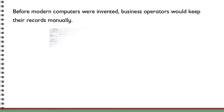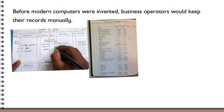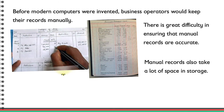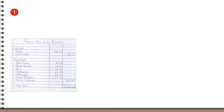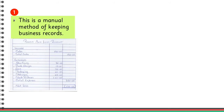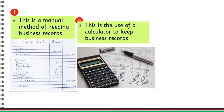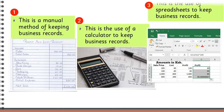Before modern computers were invented, business operators would keep their records manually. There is great difficulty in ensuring that manual records are accurate. Manual records also take a lot of space in storage. This is a manual method of keeping business records. This is the use of a calculator to keep business records.